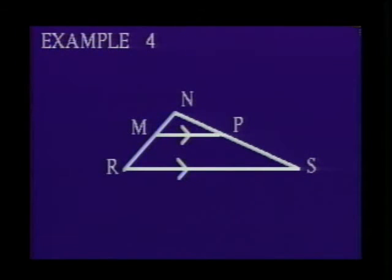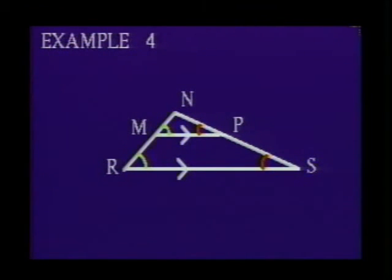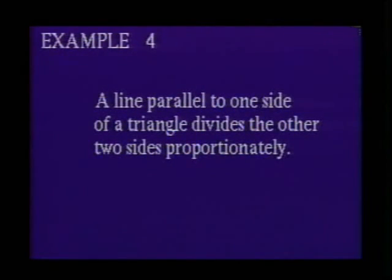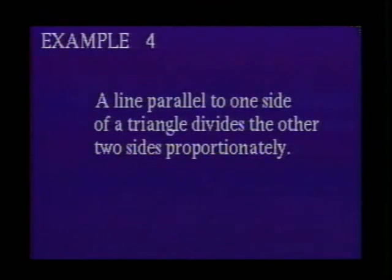Example 4: Show that triangle MNP is similar to triangle RNS, given that line segment MP is parallel to line segment RS. Because line segment MP is parallel to line segment RS, the pairs of corresponding angles NRS and NMP, as well as angles NSR and NPM, are congruent. Thus, by angle-angle, triangle MNP is similar to triangle RNS. We have now shown that a line segment parallel to one side of a triangle creates a smaller triangle similar to the original one.